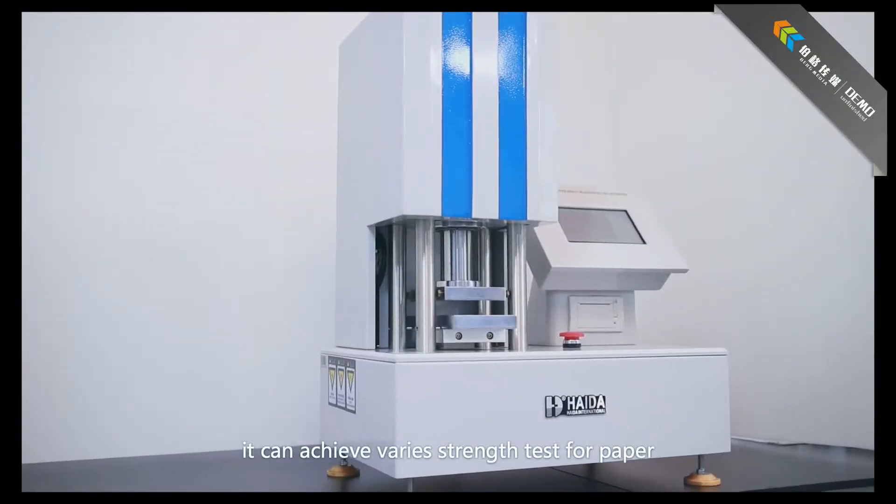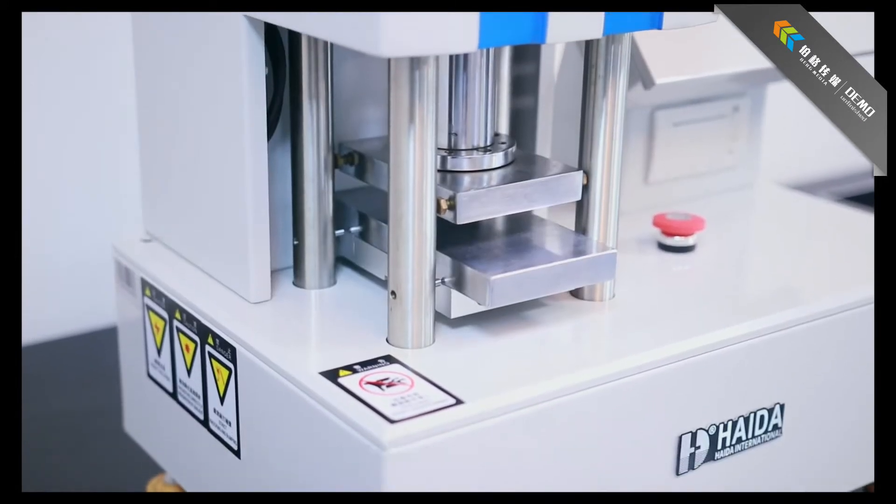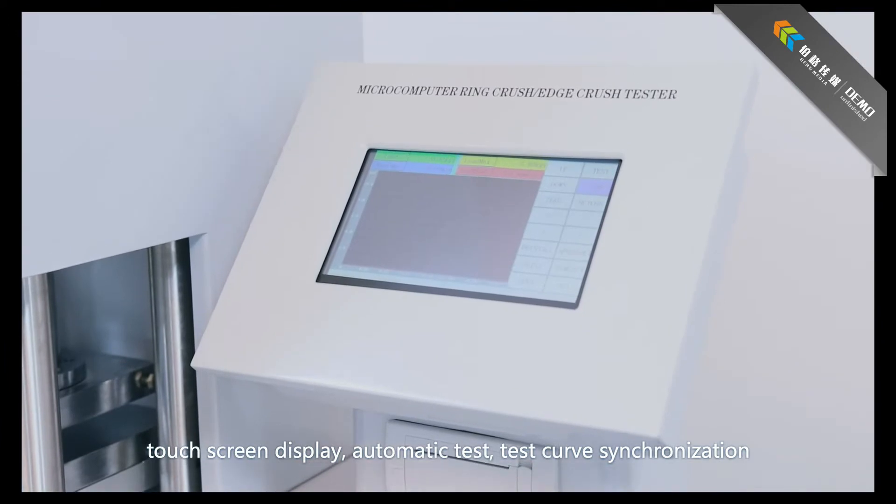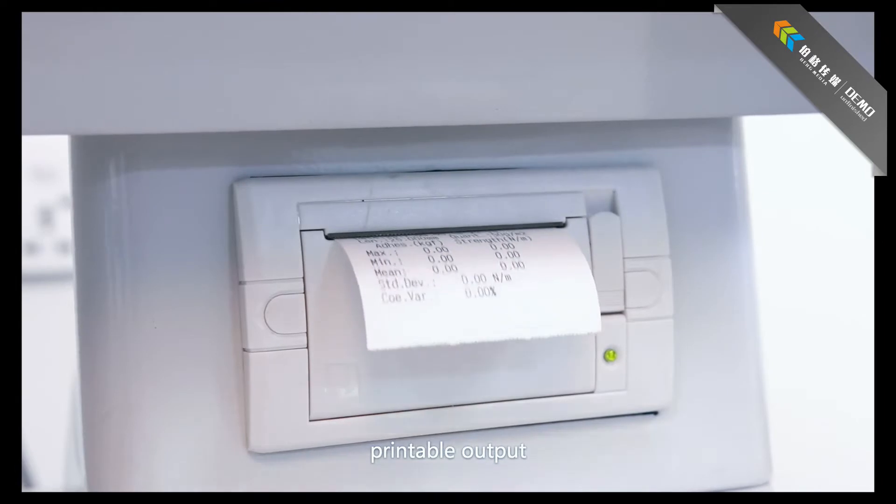It can achieve various strength tests for paper and corrugated cardboard with microcomputer control, touchscreen display, automatic test, test curve synchronization and test data automatic statistical processing function, with printable output.